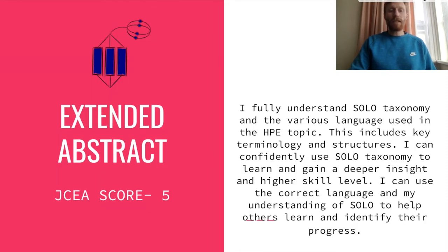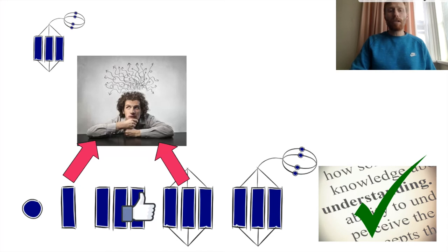If you're at an extended abstract stage, or a JCA score of five: I fully understand SOLO taxonomy and the various language used in the health and PE topic, including key terminology and structures. I can confidently use SOLO taxonomy to learn and gain a deeper insight and higher skill level. I can use the correct language and my understanding of SOLO to help others learn and identify their progress. At this level, you know the topic inside out, understand the key language and can problem solve, know all the levels of SOLO and how they interrelate, and can teach others or guide them through their learning.